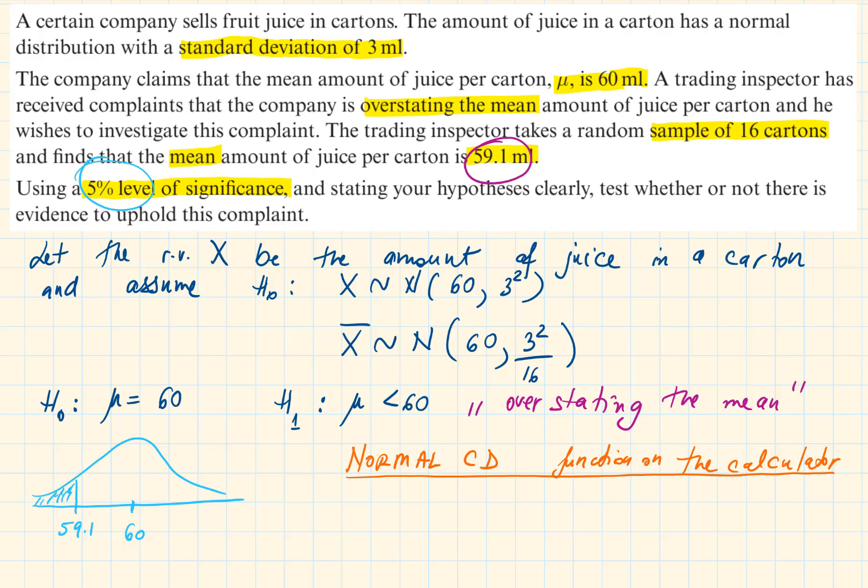It's going to be exactly the same route, but instead of the last stage where we are choosing inverse normal distribution, we are instead choosing the option for the normal CD, normal cumulative distribution. I'm going to reiterate the steps for the Casio ClassWiz calculator. You need to press menu, then option 7 for distribution, then option 2 for normal CD.